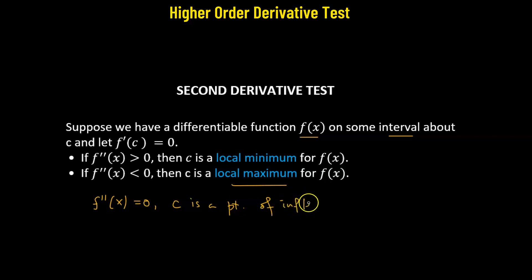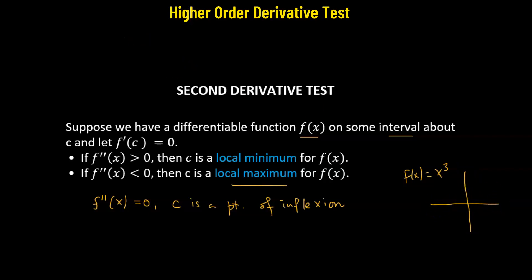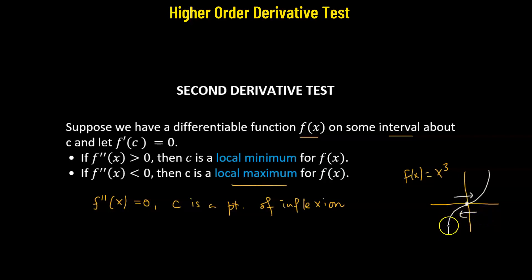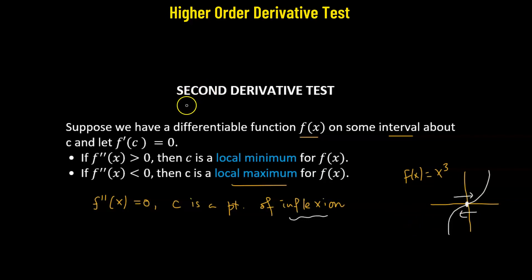An inflection point is where we cannot determine whether a function is increasing or decreasing. For example, for f(x) = x³, the origin is the critical point. Moving from left to right, the function is increasing; moving from right to left, it is decreasing. So at that point we cannot say for sure if the function is increasing or decreasing — that is a point of inflection. Both the first and second derivative tests yield the same result.